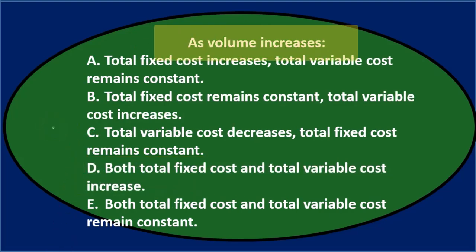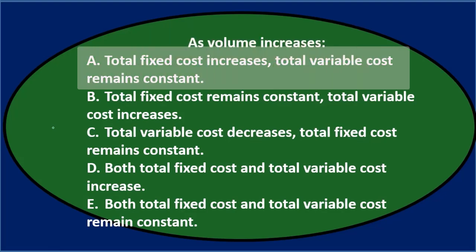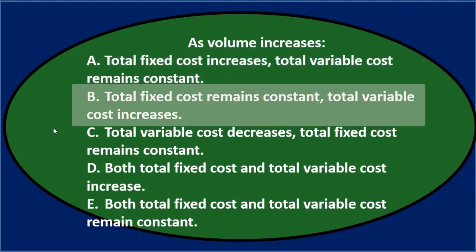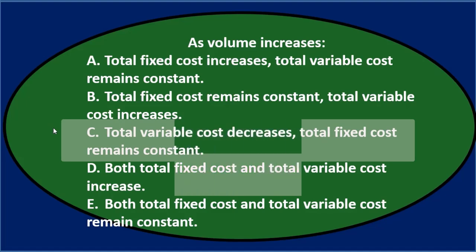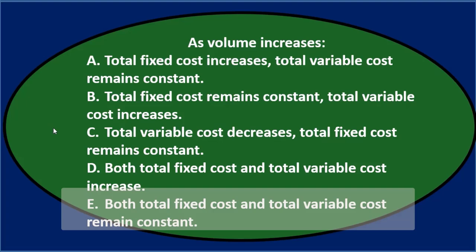Next question: As volume increases — A. total fixed costs increases, total variable costs remain constant. B. total fixed costs remains constant, total variable cost increases. C. total variable cost decreases, total fixed costs remain constant. D. both total fixed costs and total variable costs increase. E. both total fixed costs and total variable costs remain constant.